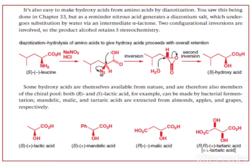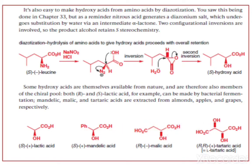Some hydroxy acids are available directly from nature and are therefore also members of the chiral pool — both R and S lactic acid. For example, they can be made by bacterial fermentation. Mandelic acid, malic acid, and tartaric acid are extracted from almonds, apples, and grapes respectively, and they are used as the chiral pool because they are easily available.